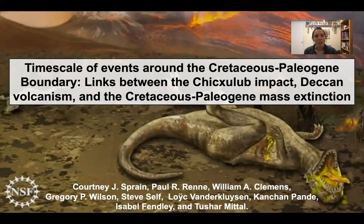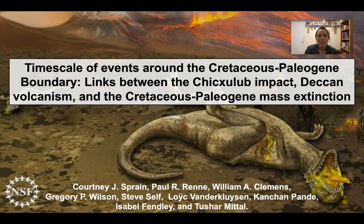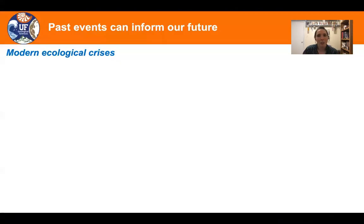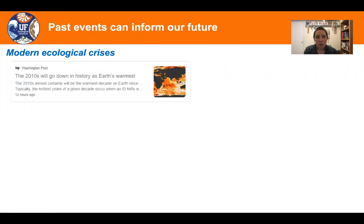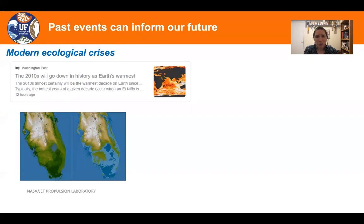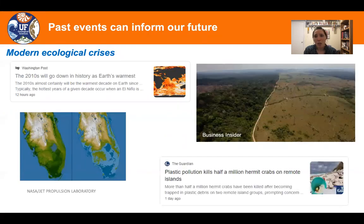Hi, everyone. I'm excited to be here today to talk to you about work that I've been doing for the last eight years working to resolve the timescale events around the Cretaceous-Paleogene boundary. At the core of this work is an important outstanding question in the field of earth science: what causes large-scale global ecosystem collapse, such as that observed in mass extinction events? This is important not only for understanding these ancient events, but also for informing the future of our planet, as modern climate change, sea level rise, deforestation, and pollution are threatening global ecosystem collapse today.